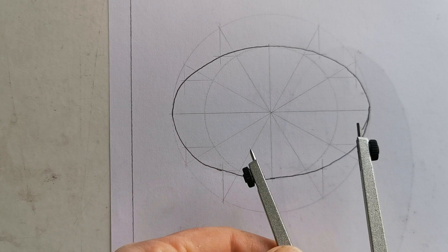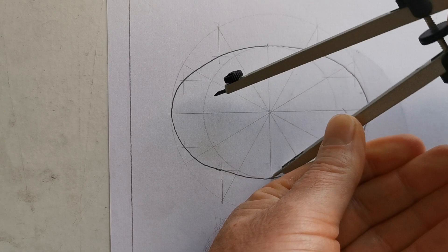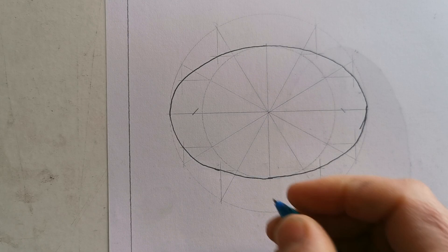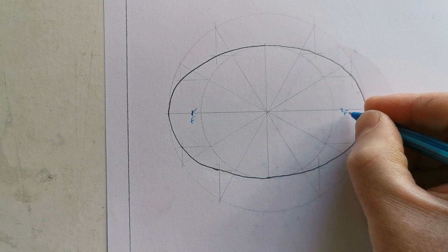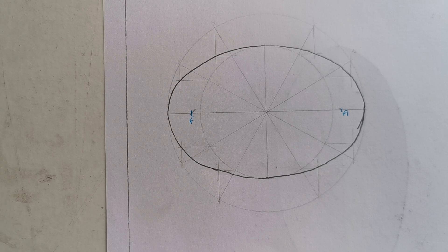to get is the focal points. So half the major swung from the end of the minor gives us the focal points, and I'm going to clearly mark these now because these are very important: F and F1.